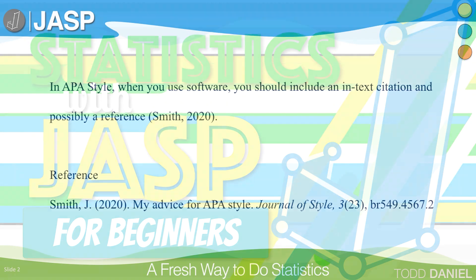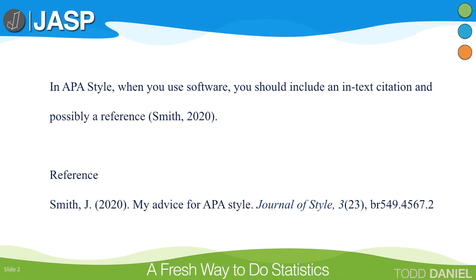When you use statistical software for an analysis, APA style requires that you cite the name of the software that you used within the text of your research paper. But what type of in-text citation should you use, and how should you reference it on your references page?